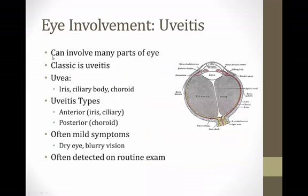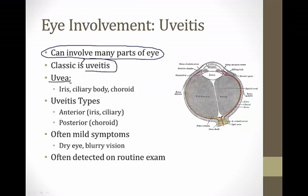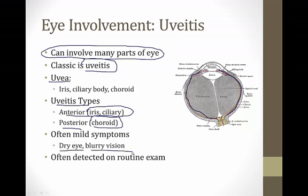Eye involvement in sarcoid can affect many parts, but the classic finding to know is uveitis. The uvea includes the iris, the ciliary body, and the choroid — it's the inner vascular layer of the eye running from the back all the way to the front. Uveitis can be anterior, involving the iris and ciliary body, or posterior, involving the choroid. Patients with sarcoid who develop uveitis usually have mild symptoms like dry eyes or blurry vision, and it's often picked up on routine exam when ophthalmologists look in the back of the eye.